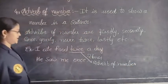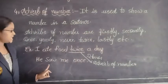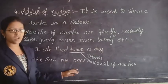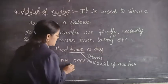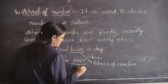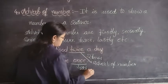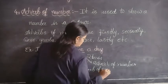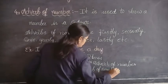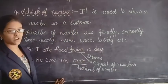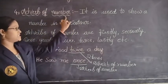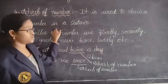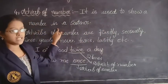Coming to the second sentence: He saw me once a week. In this sentence, once is the adverb of number. So, adverb of number means nothing but it is used to show a number in a sentence.